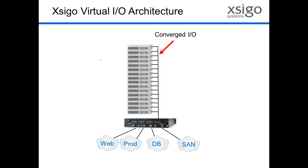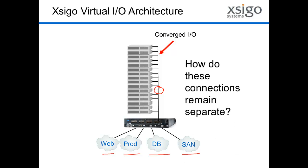So when we converge the I/O, what do we do? How do we maintain that same isolation? We're connecting different networks to the I/O director through multiple cables, and then going out to each server through a single cable. How are we ensuring the isolation of that environment — making sure things stay as separate as they were with physically separate networks?